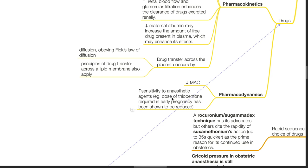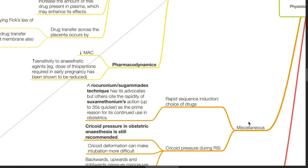Miscellaneous: Rapid sequence induction drug choice. A rocuronium-sugamadex technique has its advocates, but others cite the rapidity of suxamethonium action, up to 35 seconds quicker, as the prime reason for its continued use in obstetrics.